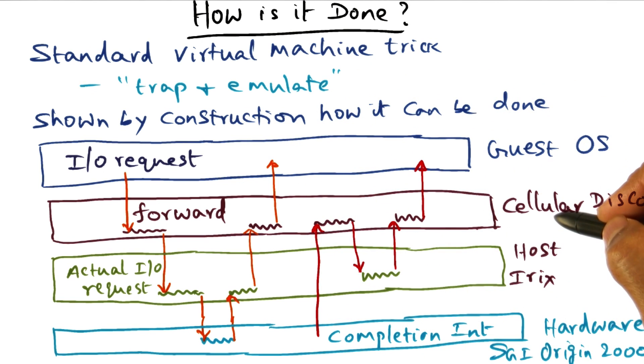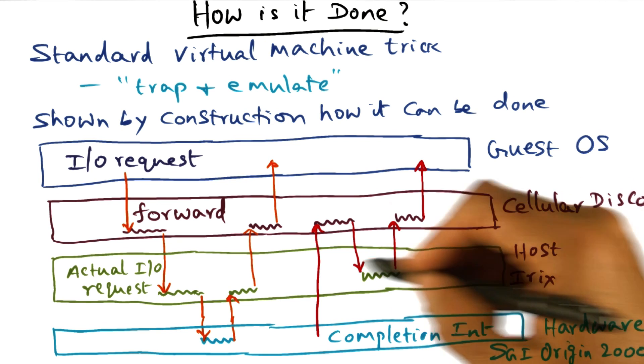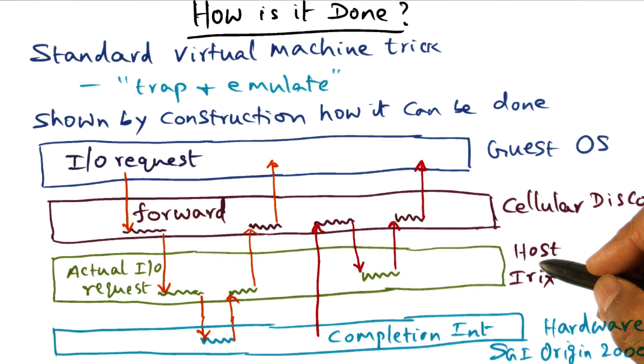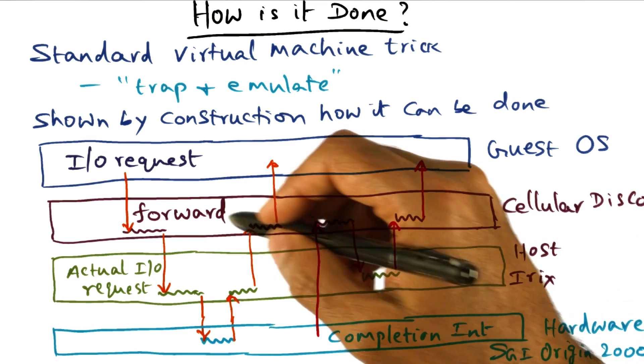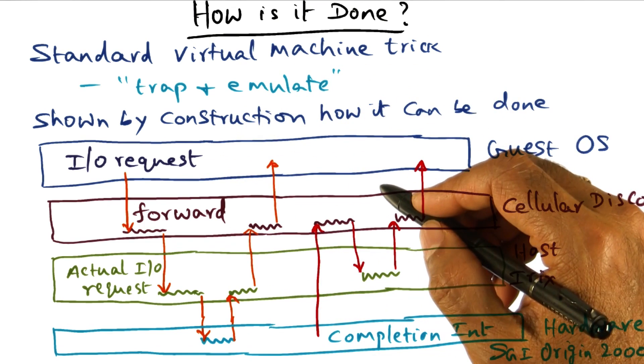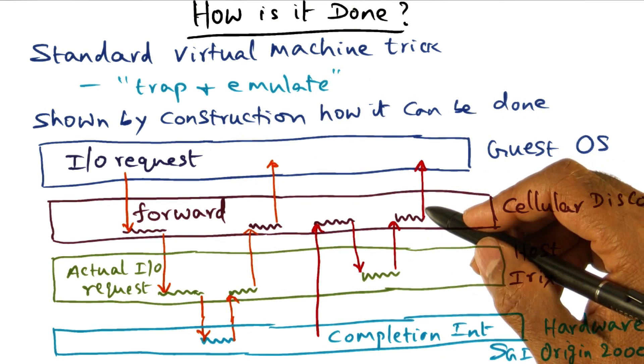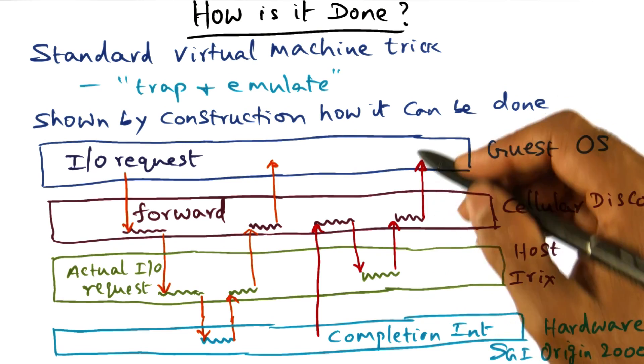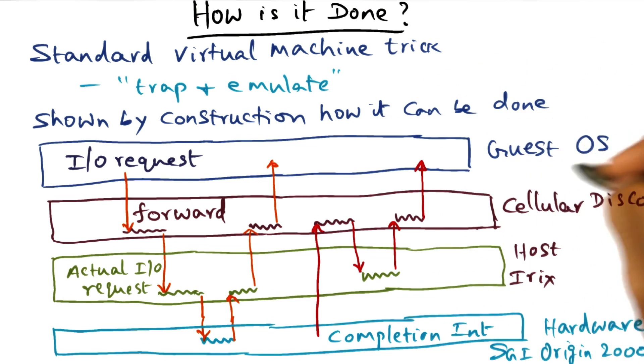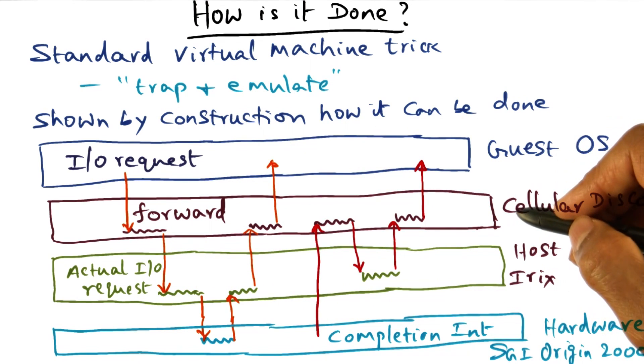This Cellular Disco runs as a multi-threaded kernel process on top of the host operating system, Irix in this case. The other thing they have shown by construction is that the overhead of doing it this way—providing the services needed for the guest operating system through this Cellular Disco virtualization layer—can be kept efficient and low.